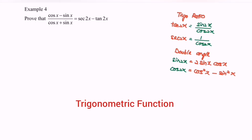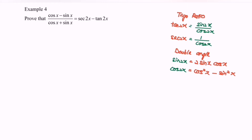Hello everyone. In this video I'm going to show how to prove: (cos x - sin x) / (cos x + sin x) = sec 2x - tan 2x. For this question, I'm going to begin with the right-hand side, because the right-hand side has the angle 2x while the left-hand side has x. It is easier for me to convert from 2x to x.